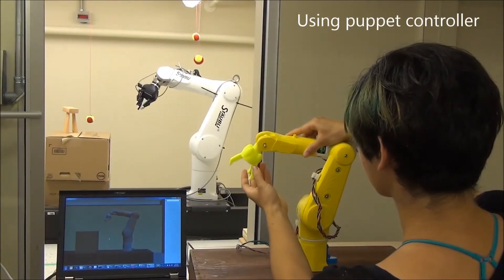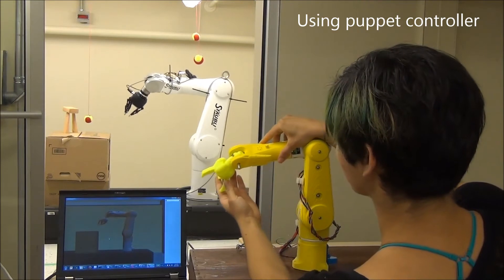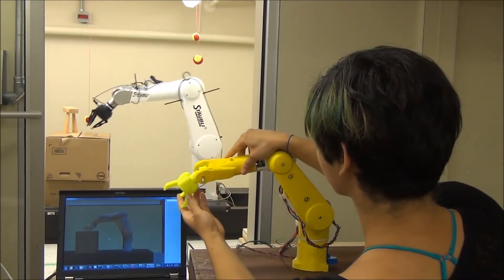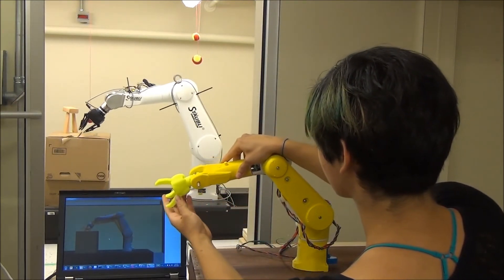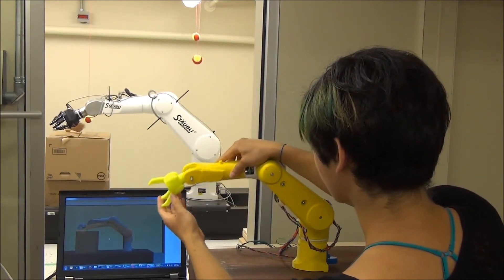The RoboPuppet controller, or Puppet, is a 3D printed miniature of the target robot which uses encoders embedded in the joints to translate the user's physical actions with the puppet directly into motion on the robot.